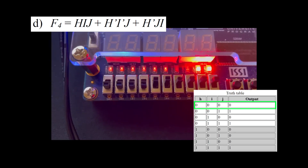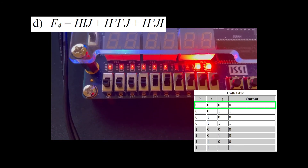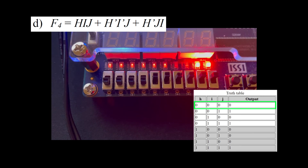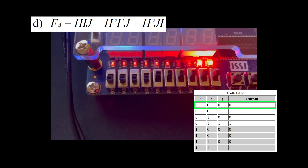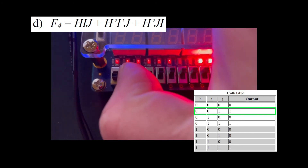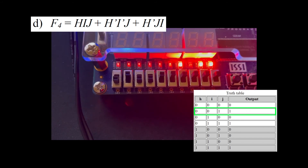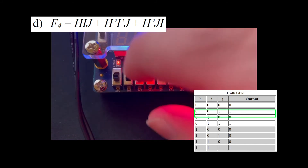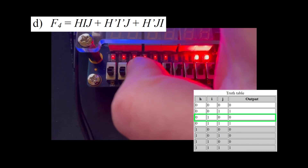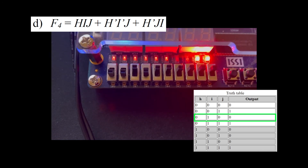For the first half, H equals 0. When I is 0 and J is 0, F4 is 0. When I is 0 and J is 1, F4 is 1. When I is 1 and J is 1, F4 is 1.